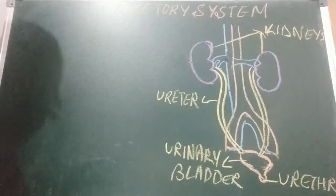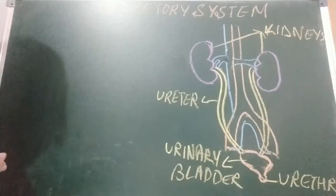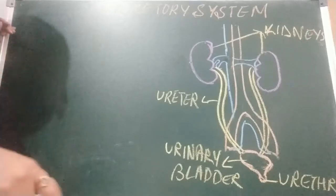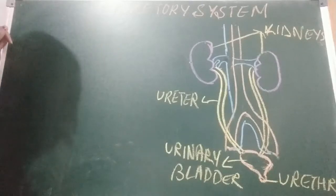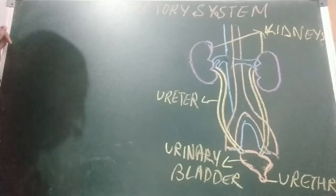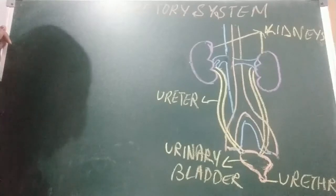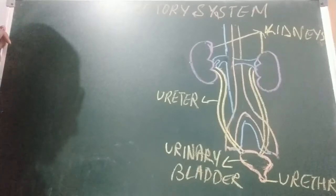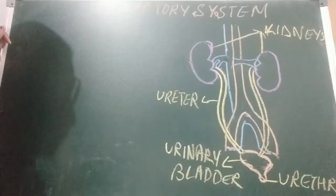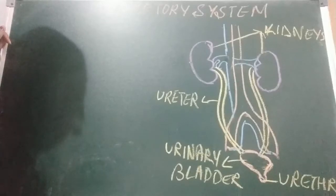Hello children, today we are going to discuss excretion in animals. What is excretion? The process of removal of waste products produced in the cells of living organisms is called excretion. So many vital activities are taking place in the body, and during those reactions a large amount of waste is produced.